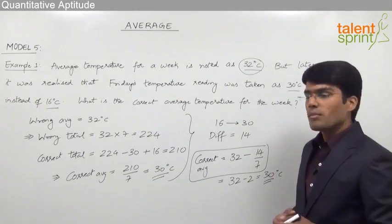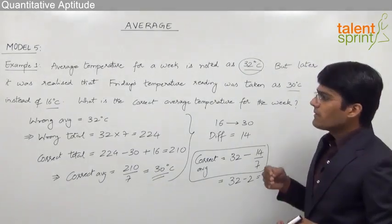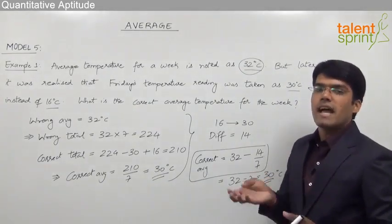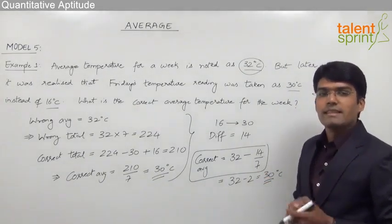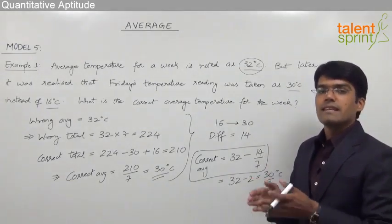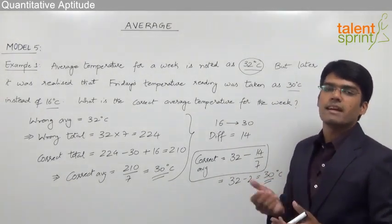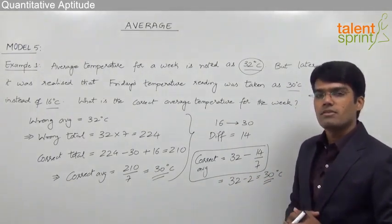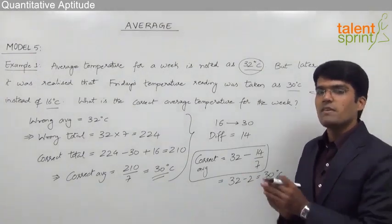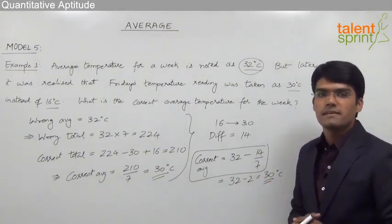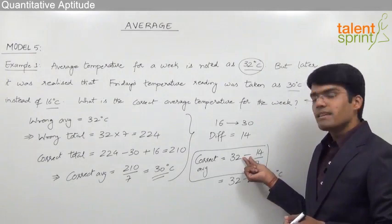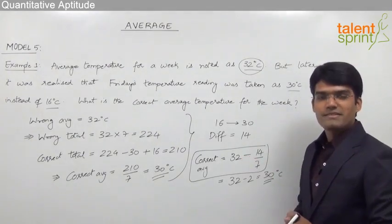Similarly, if one of the readings is taken as lesser than the actual value, then the wrong average calculated will be less than the correct average. So to find the correct average, we need to add the difference. In that case, we should take plus instead of minus.